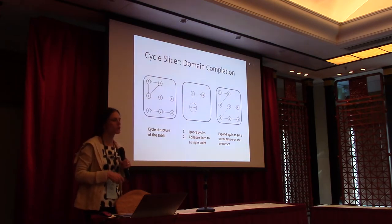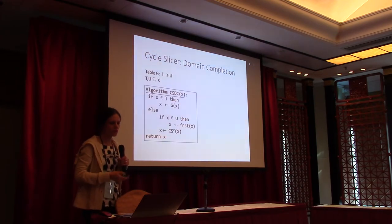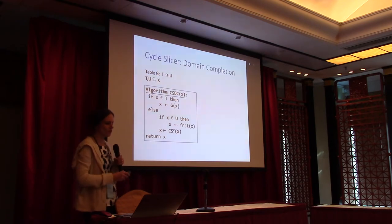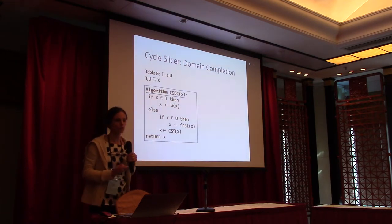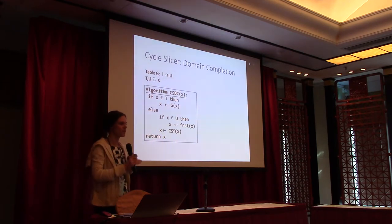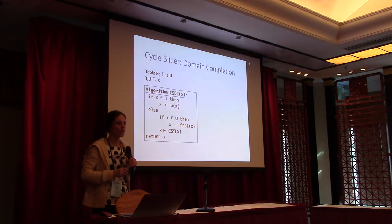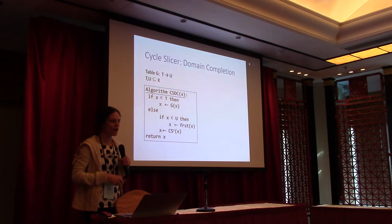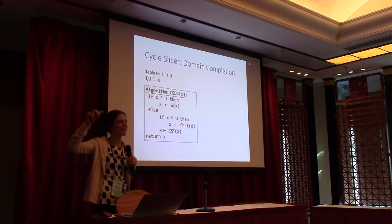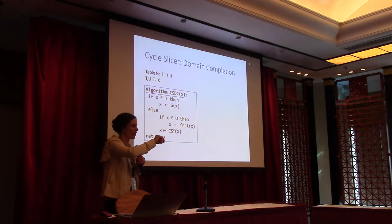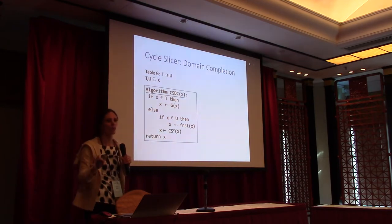Implementation details are a bit tricky, especially since we want to evaluate the algorithm for a single point without a global view. If a point is in T — the input side of the table — we already have a matching and can ignore it. If the point is in the output side but not the input side, these are points at the end of lines — we map them to the first point in the line, then run cycle slicer. For every other point, we just run cycle slicer normally. The first-and-last functions can be pre-computed and stored with the table.